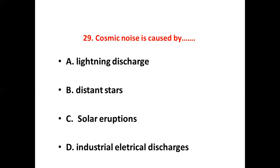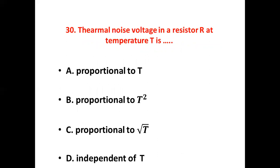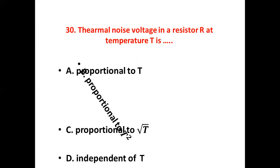Twenty-eighth bit: The amount of information in a continuous signal is — Option A: 0. Option B: bytes. Option C: bits. Option D: infinite. Answer: Option D, infinite.